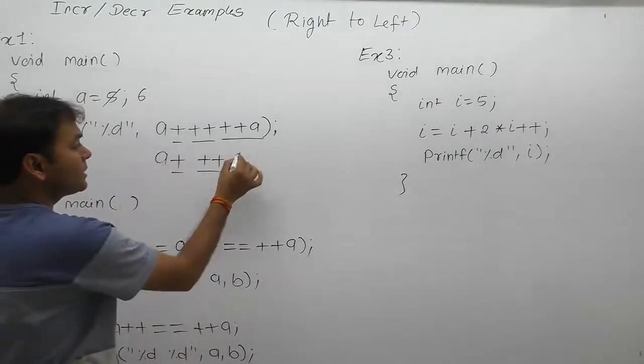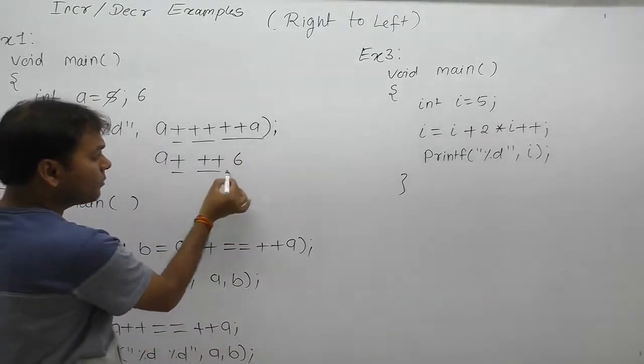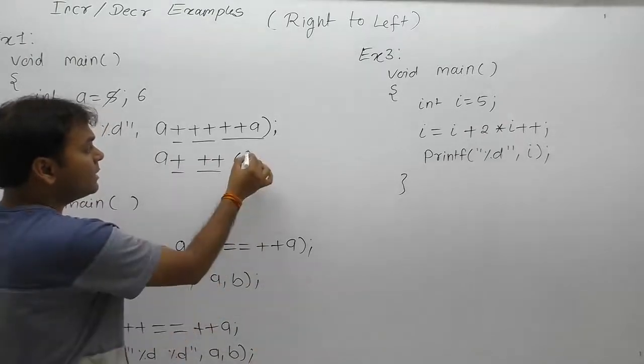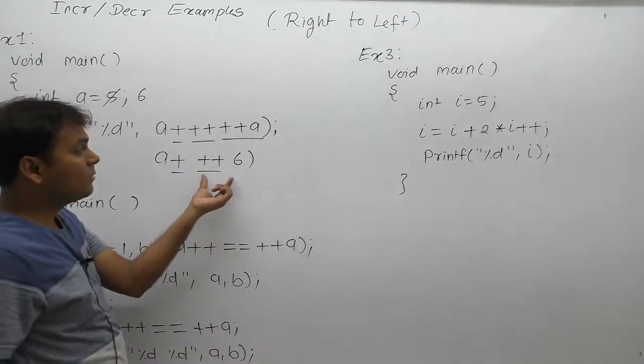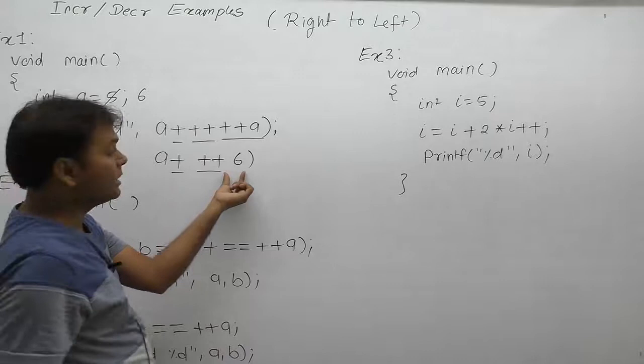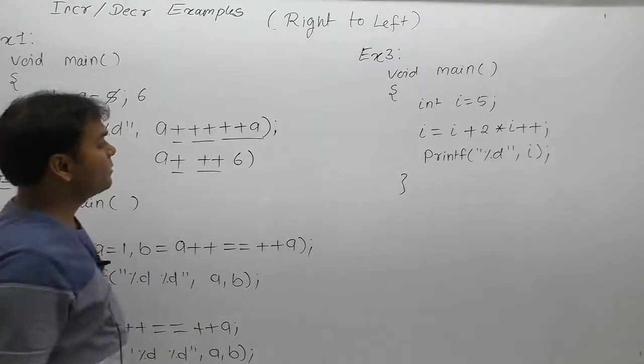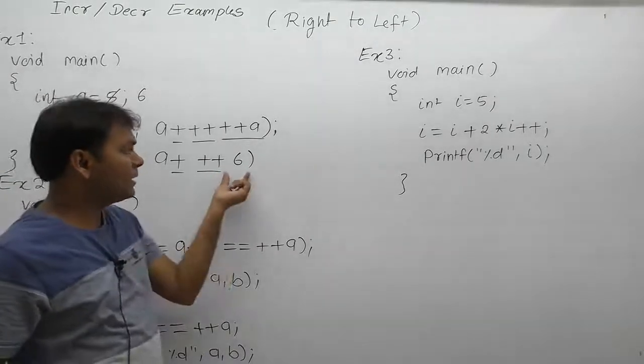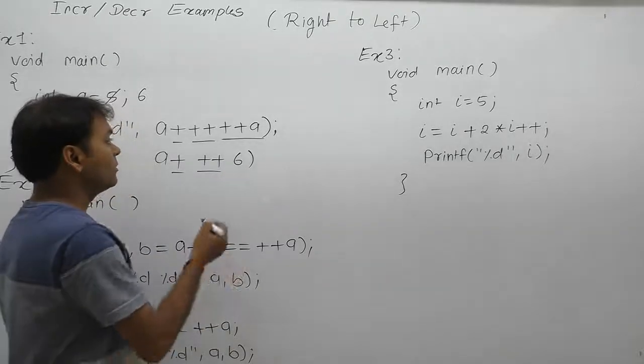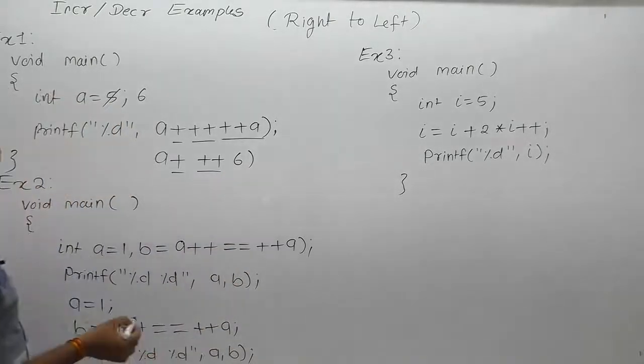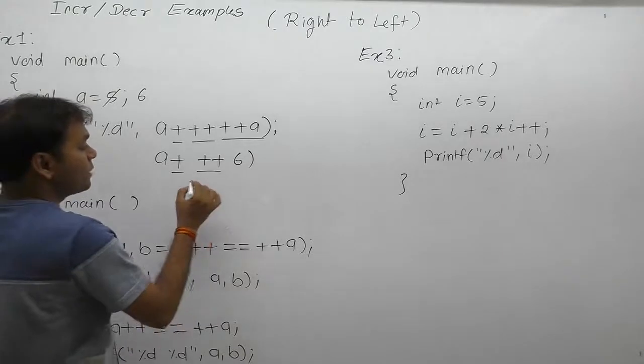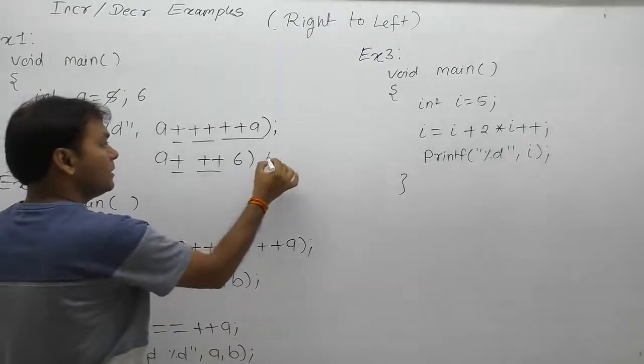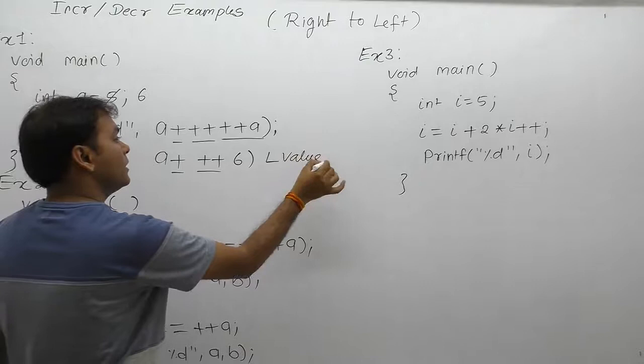Next time a pre-increment is applied to the value. As we know, we cannot increment values directly. Therefore, a compile time error will be raised. L-value required. In that case, compile time error L-value required. Clear means variable value may increment possible.